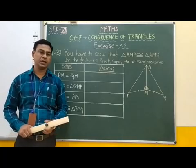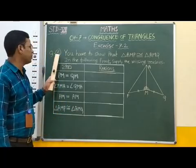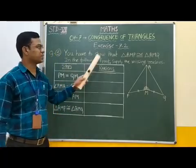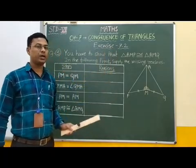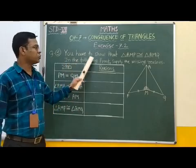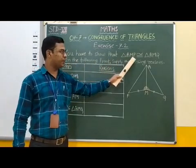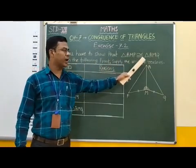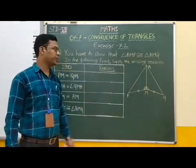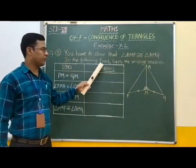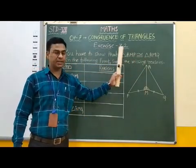Good morning students. In this video we are going to solve question number 3 of exercise 7.2. The question is you have to show that triangle AMP is congruent to triangle AMQ. In the following proof, supply the missing reasons.